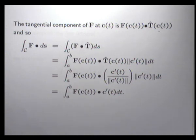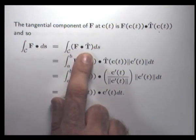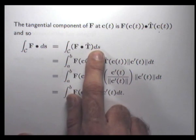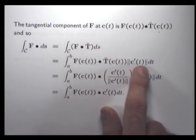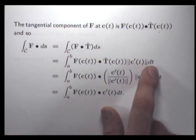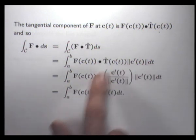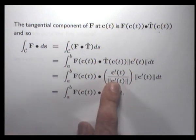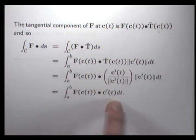So how do we actually compute this line integral? From the definition of the line integral, the tangential component of f along c of t is just this dot product. I'm going to replace what's in brackets with this, and we know that the ds element is just the magnitude of c-dash dt. I can now replace T-hat of c of t with this and cancel these things out, so we end up with this simple, computationally important representation for a line integral.